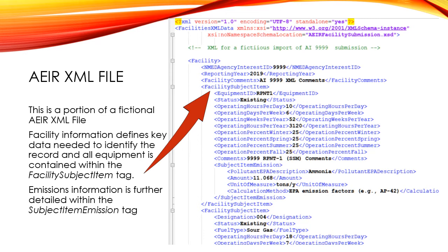You'll also see comments related to the facility. Furthermore, emissions information can be found within the subject item emission tag. This can be repeated for each emission within the piece of equipment at the facility. Within it you'll see the EPA pollutant description; you can also provide an EPA code for that pollutant, as well as the amount, the unit of measure, and the calculation method used.